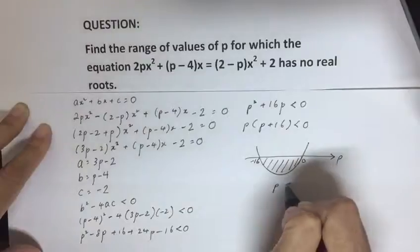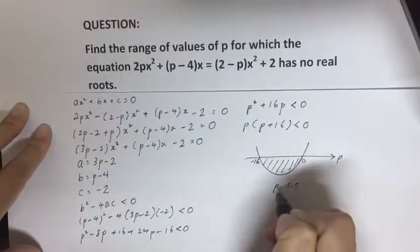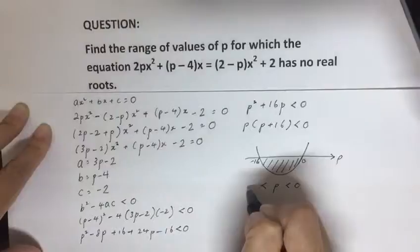And this means that your p should be less than 0, and more than -16.